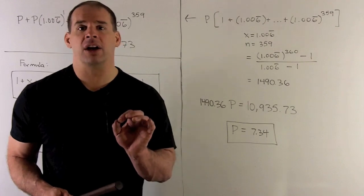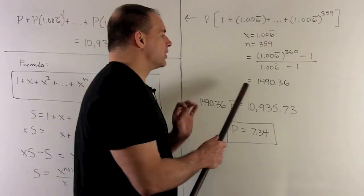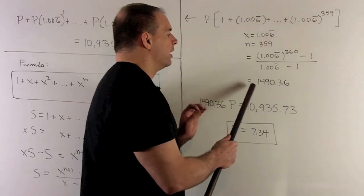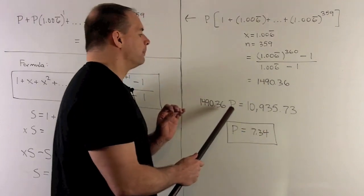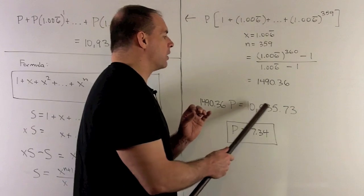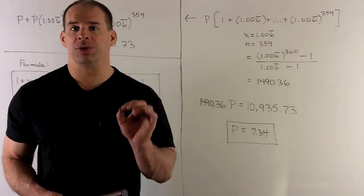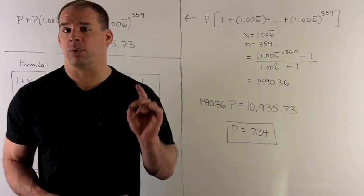You push that through a calculator. Outcomes 1,490.36. So we're going to have this number times p is equal to our 10,935.73. If I divide through, we'll get our p equal to $7.34.